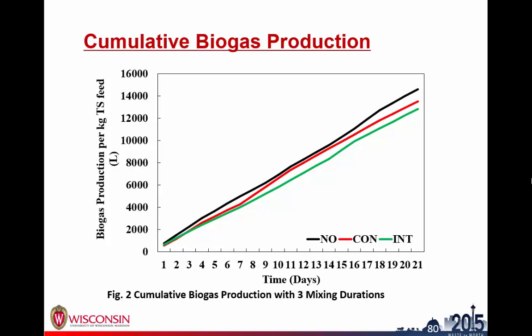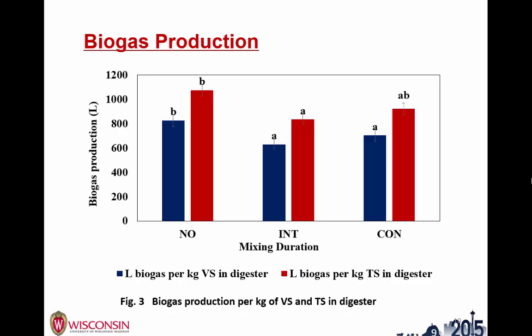I'm going to share part of our results on gas production, solids, and methanogens. Here is the cumulative biogas production from the three treatments over 21 days retention time, with units corrected for total solids fed. Statistically, no-mixing has a higher gas production compared to mixing treatments. But if we look at biogas produced per unit of solids in the digester, no-mixing will also have a significantly higher value.